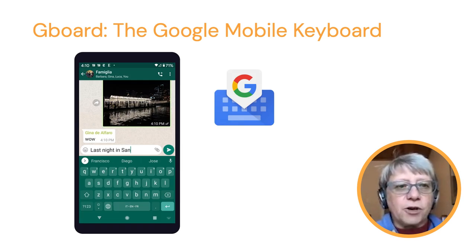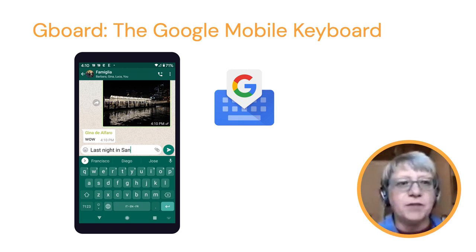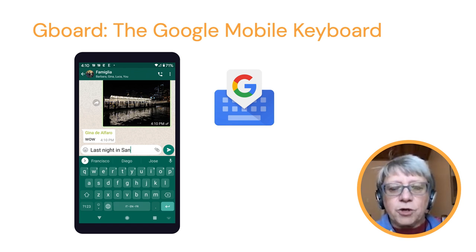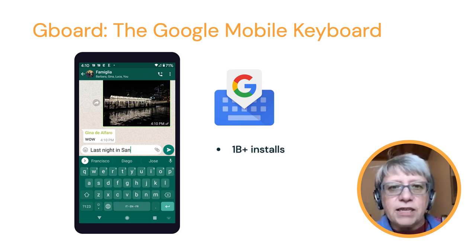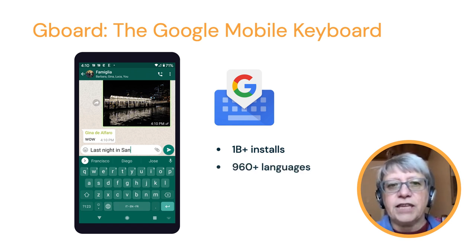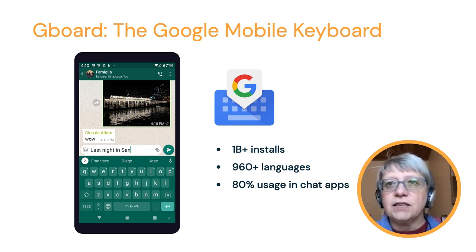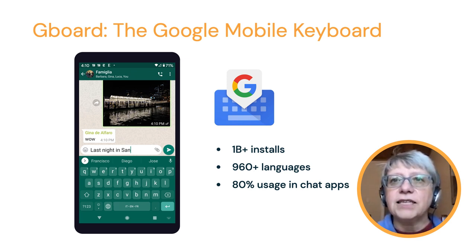Here on the left is a picture of a keyboard with me typing something to my family. You can see next-word predictions — I typed 'last night in San,' and in the suggestions it offers Francisco, Diego, or Jose. The Gboard keyboard has over 1 billion installs, supports layouts for over 960 languages, and 80% of the usage happens in chat apps, which means it's very private data where a privacy-preserving learning technique is very interesting.